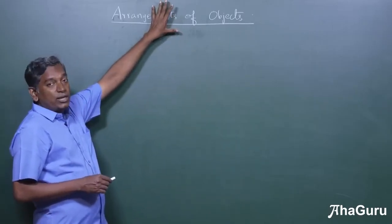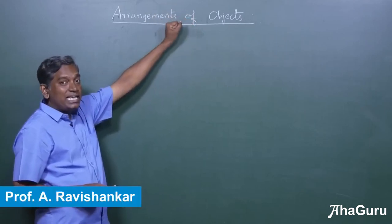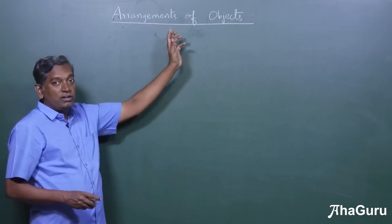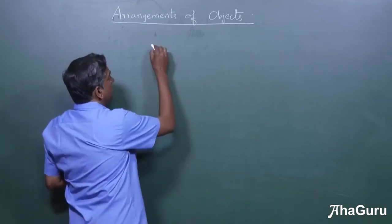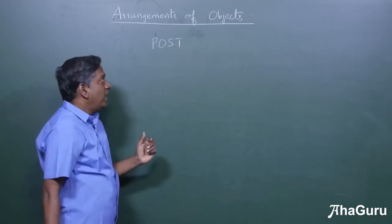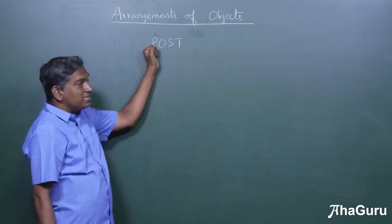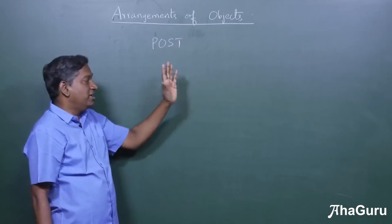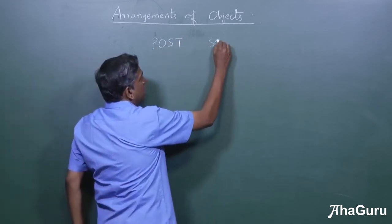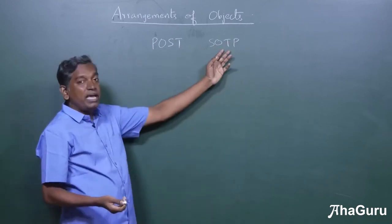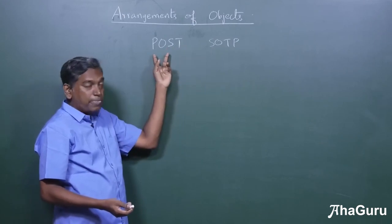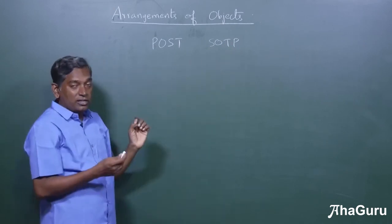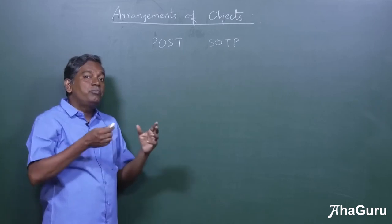Let's understand how we can calculate the number of ways of arranging objects. Suppose we have the letters of the word 'POST' and we want to arrange those letters in any order to make new words. The new words can have meaning or need not have meaning. For example, 'SOTP' is not a word at all but is made from the letters of this word. The objects are the letters and we can arrange them in any order.